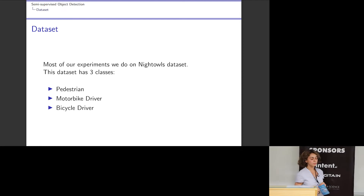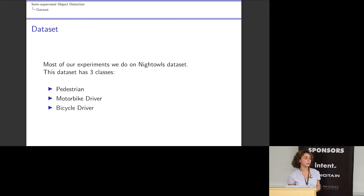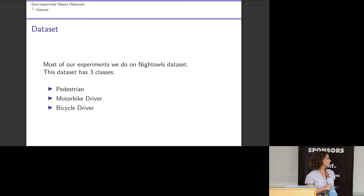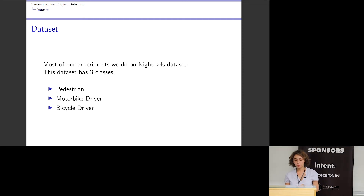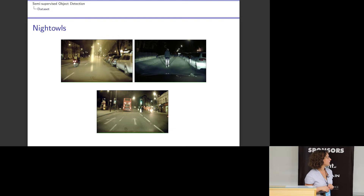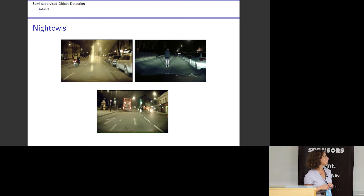Most of our experiments are on the NITOL dataset. This dataset has three classes: pedestrian, motorbike driver, and bicycle driver. We can see that the images in this dataset have low quality.